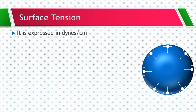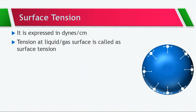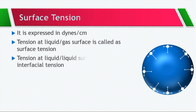Surface tension is expressed in dynes per centimeter. The tension at a liquid and gas surface is called surface tension, while the tension or pressure which is present at liquid-liquid surfaces is called interfacial tension. This is mostly seen in liquids which are immiscible with one another — if immiscible liquids are kept in the same container, there is a tension at the border of these two liquids, which is called interfacial tension.